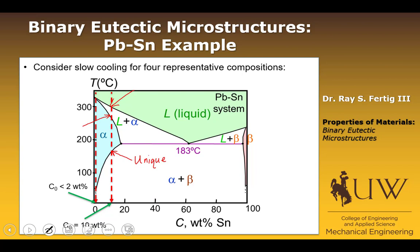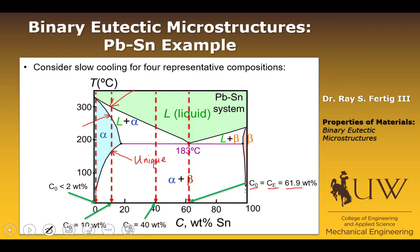Next we're going to look at a eutectic composition, where the system composition C0 is equal to the eutectic composition of 61.9 weight percent tin, and we'll look at what that microstructure looks like. And then finally, we're going to look at an intermediate composition of about 40 weight percent tin. So that's the outline of what we're going to tackle.